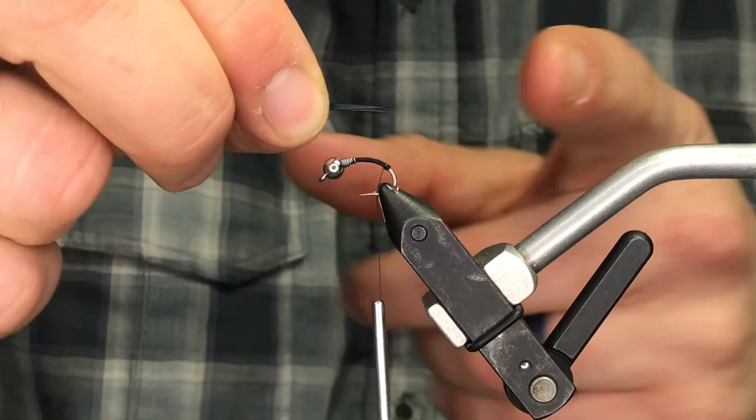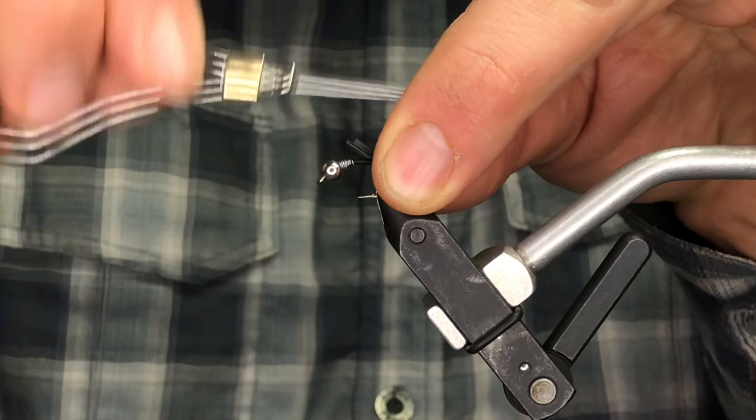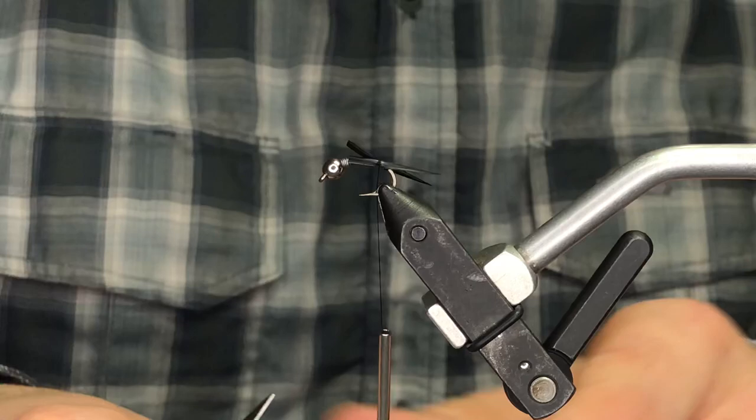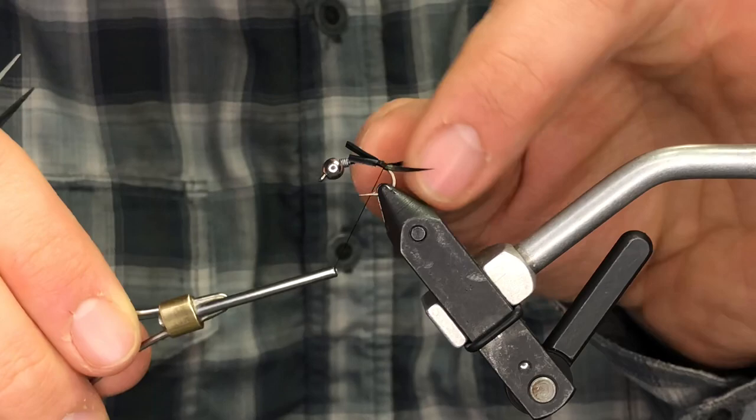The butt sections do not need to be aligned, but the tail, the tips need to be very close. And this is very much a guess and check in terms of guessing how long you want these to be. Different tiers like different things. I'm going to lay those down and do a pinch wrap. I'm going to do two wraps and they don't look great, but what's going to happen is I'm going to wrap towards that thread bump we created. And there, with some thread tension, they're going to splay right out just the way I want them to. See that.